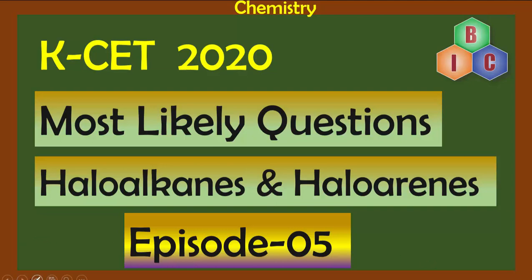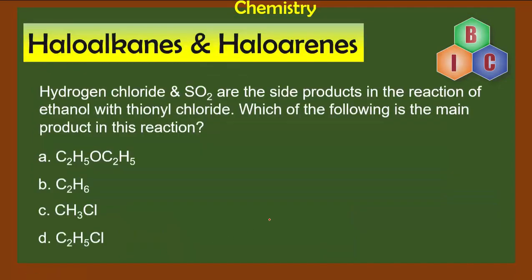Here is our question: Hydrogen chloride and sulfur dioxide are the side products in the reaction of ethanol with thionyl chloride.